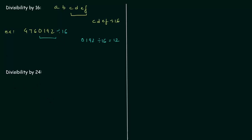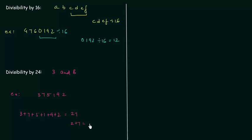Now we will move to divisibility by 24. A number is divisible by 24 if it is divisible by both 3 and 8. For example, 375192: for divisibility by 3 we add 3 plus 7 plus 5 plus 1 plus 9 plus 2, which equals 27. 27 is divisible by 3; you can further add the digits: 2 plus 7 is 9, and 9 is divisible by 3. For divisibility by 8 we consider the last 3 digits, 192. 192 is divisible by 8 and gives 24. So this number is divisible by 24 as well.